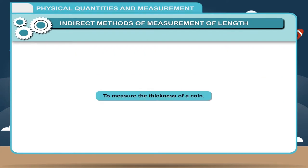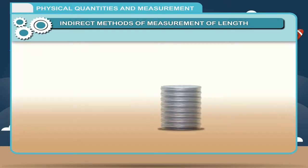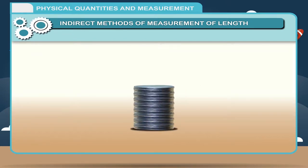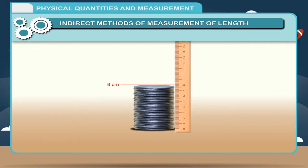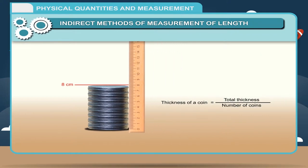Activity: To measure the thickness of a coin, take some identical coins (say 20 to 25 in number) and place them one over the other — all these coins will make a cylindrical column. The height of this stack of coins can easily be measured by a ruler placed vertically against it. To find the thickness of a single coin, divide the total thickness by the number of coins. So, thickness of a coin = total thickness ÷ number of coins.